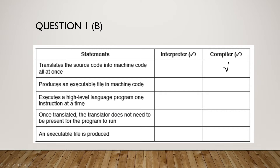'Produces an executable file in machine code' — Compiler again. 'Executes a high-level language program one instruction at a time' — Interpreter. 'Once translated, the translator does not need to be present for the program to run' — Compiler. 'An executable file is produced' — Compiler.